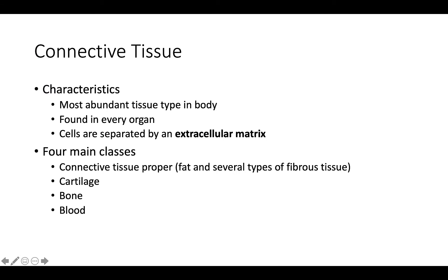Moving on with connective tissue, we can talk about some characteristics of that. It's the most abundant type of tissue in the body. It's found in every organ, and the cells are going to be separated by an extracellular matrix. You can think of the matrix as the liquidy part of a chunky soup, where the chunks are the protein fibers and cells that maintain the matrix.